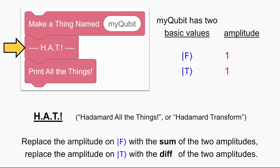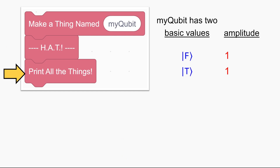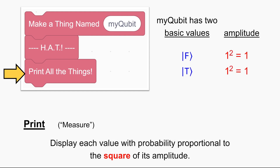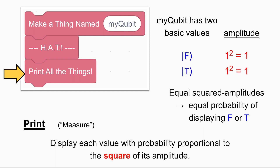Some people like to say that my qubit is in a superposition with equal amplitude on false and on true. The last line of code is to print our qubit — or to measure it, in quantum computing terms. The rule is that we display each possibility with probability proportional to the square of the amplitude. The amplitude on false is one, and one squared is one. The amplitude on true is also one, and one squared is also one. So we have equal squared amplitudes, which means we see false or true with equal probability — 50-50. This finally explains the behavior we saw in Scratch.